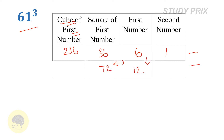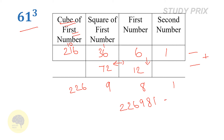Add the two rows. The last digit is 1. 12 plus 6 is 18: write 8, carry 1. 1 plus 36 is 37, plus 72 is 109: write 9, carry 10. 216 plus 10 is 226. Therefore the cube of 61 is 226981.